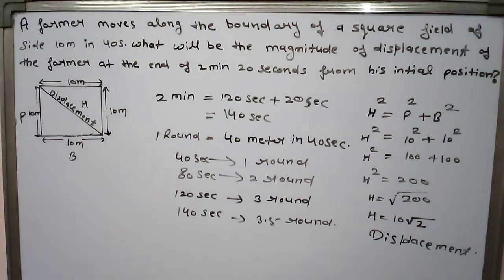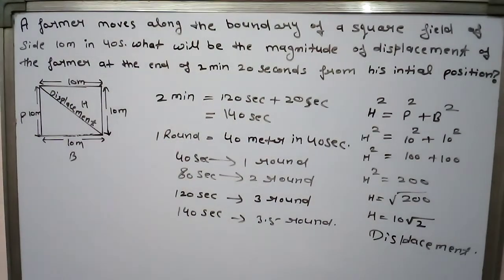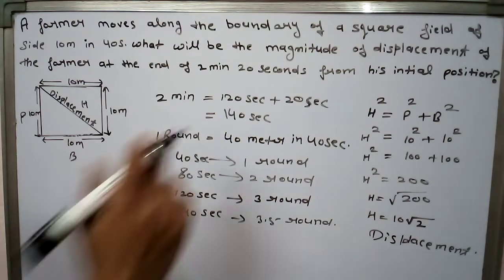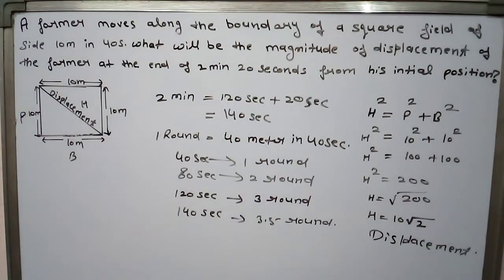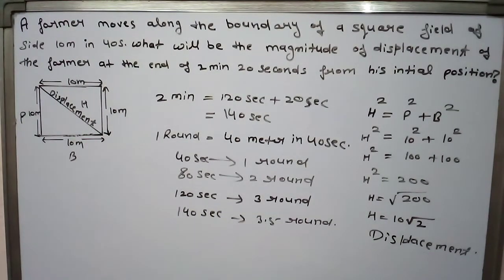Now, let's summarize what we did. We have a square field made of 10 by 10 meters, and we have found where displacement is. We have seen 2 minutes 20 seconds, we converted it into seconds. Then we have seen how many rounds we can do. We found 3.5 rounds. Then we found displacement using Pythagorean theorem. The hypotenuse came out to be 10 root 2.